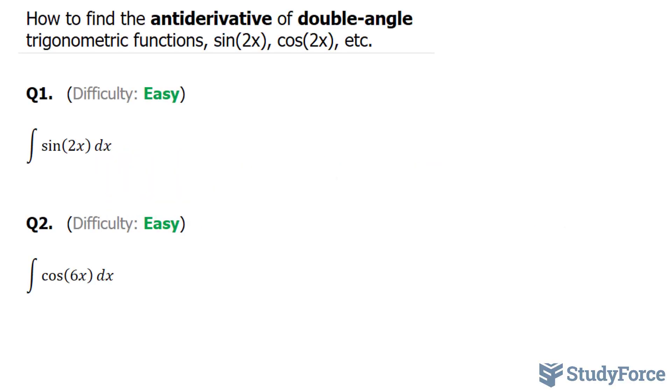In this video, I'll show you two examples on how to find the antiderivative of double-angle trigonometric functions, such as sine 2x, cosine 2x, etc.